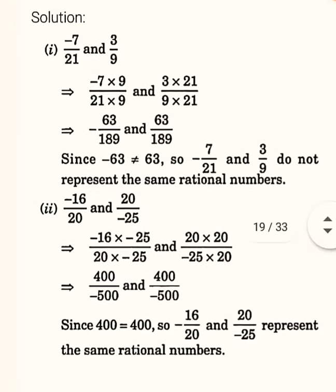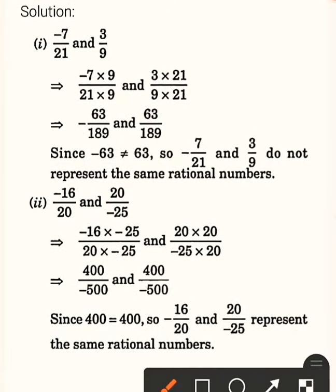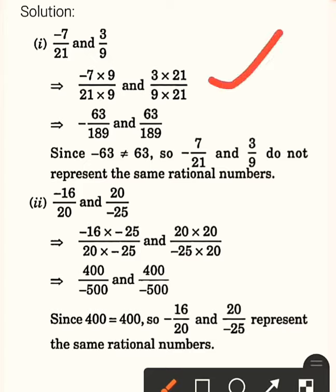So, 9 into minus 7 on one side, and 21 into 3 on the other side. We multiply both. The denominators — 21 and 9 — will be multiplied for both sides to keep them the same.